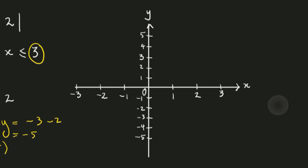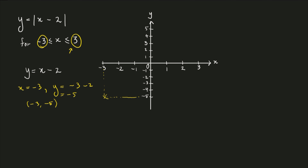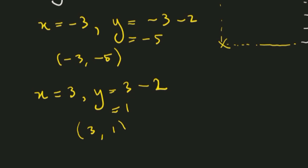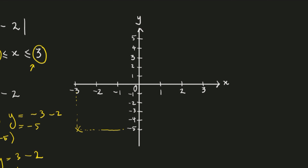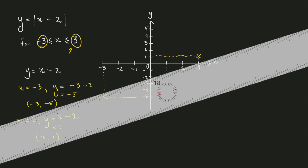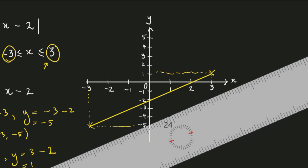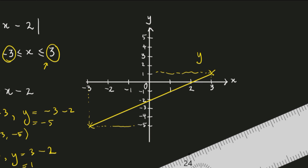Let's plot this point on the graph: negative 3 and negative 5. Now let's find the second point using the other extreme of the domain, positive 3. When X equals positive 3, Y equals 3 minus 2, which is 1. So we have another point: 3, 1. Let's plot this on the graph. Now that we have two points, we join them with a ruler to get the straight line — this is the graph of Y equals X minus 2.